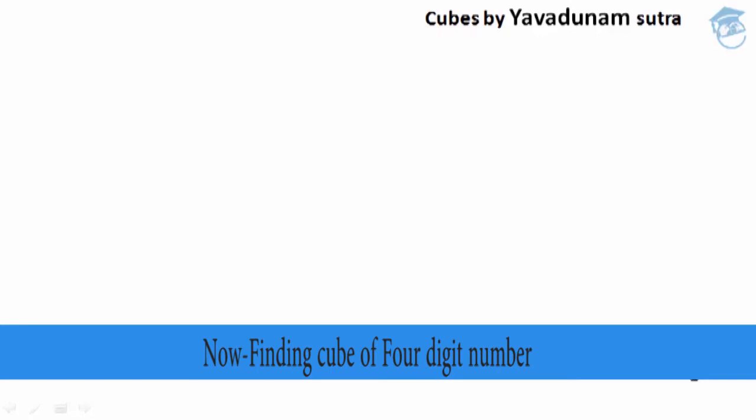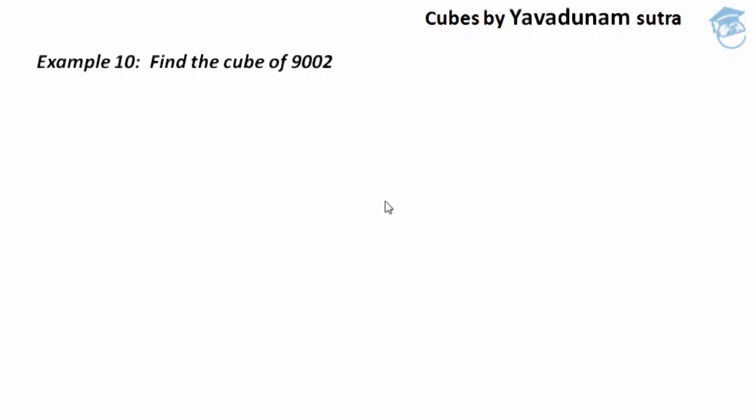In this session we are going to see one more example regarding the same concept — how to find the cube of a given 4-digit number by using Avadunam Sutra when the bases are like 2000, 3000, 4000, 5000, etc. The example I am going to take here is: find the cube of 9002.